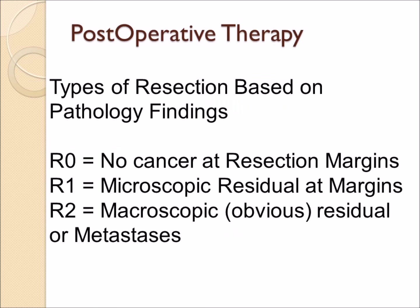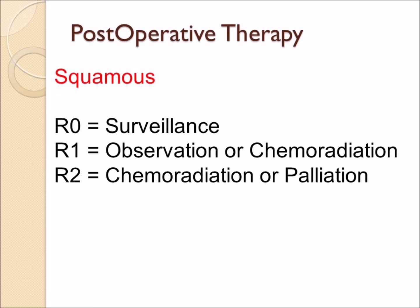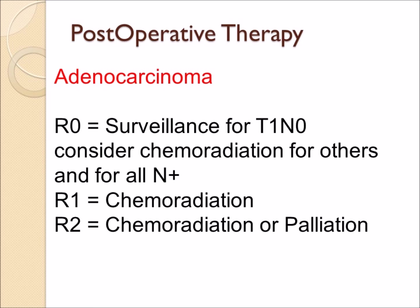If surgery is performed, the pathologist will comment on how complete the resection was. R0 means no cancer at the resection margins or edges. R1 means there was still microscopic residual at the margins. R2 means there was obvious cancer left behind. For squamous cancer with an R0 resection, no further therapy is generally recommended, but if cancer remains, chemoradiation may be offered. With adenocarcinoma, even with an R0 resection, there may be some advantage to adding chemoradiation for patients with lymph node involvement. With R1 or R2 resection, additional treatment with chemo or radiation is certainly worth considering.